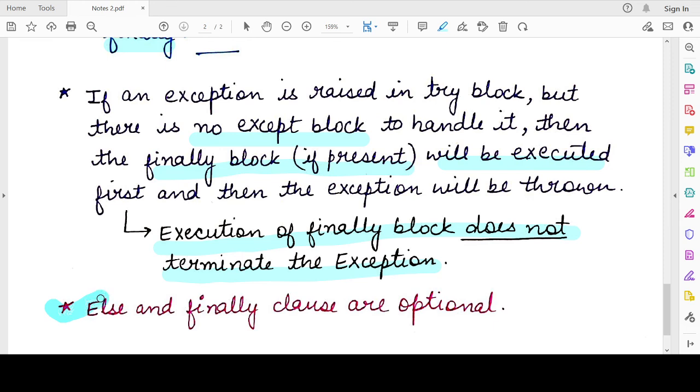And the last point is, like we saw in the previous video also, there is an else clause and there is a finally clause as we saw right now. So both these clauses are optional in nature. With a try, you have to write an except clause, but you may or you may not write an else or a finally clause.